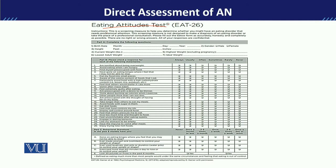Looking at the Eating Attitude Questionnaire, obviously you need to know the child's date of birth, their age, their height, their current weight, as well as their highest weight, ideal weight, and lowest weight. Gender is also important information to collect.